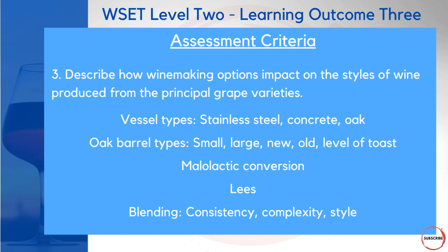Moving to assessment criteria number three: describing how winemaking options impact styles of wine from those principal grape varieties. You'll be thinking about the types of vessels used — stainless steel, concrete, or oak — and if oak, whether it's a small or large barrel, new or old, and the level of toastiness. You'll also consider how malolactic conversion and lees aging impact certain grapes, and why we might blend grapes for consistency, complexity, and style.